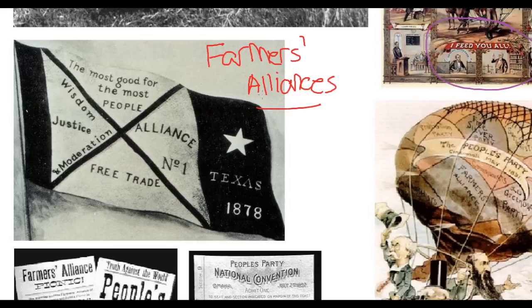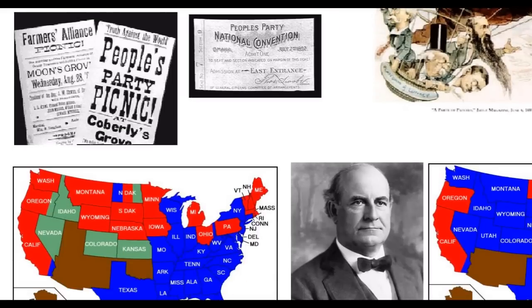The Farmers' Alliances organized banks and newspapers to advocate for their members, and they participated in state and local politics, especially in the Midwest and South. As a result, farmers and rural people became much more active in the politics of the time period. Beginning in the 1890s, the Farmers' Alliance began to evolve into a new political party known as the People's Party.